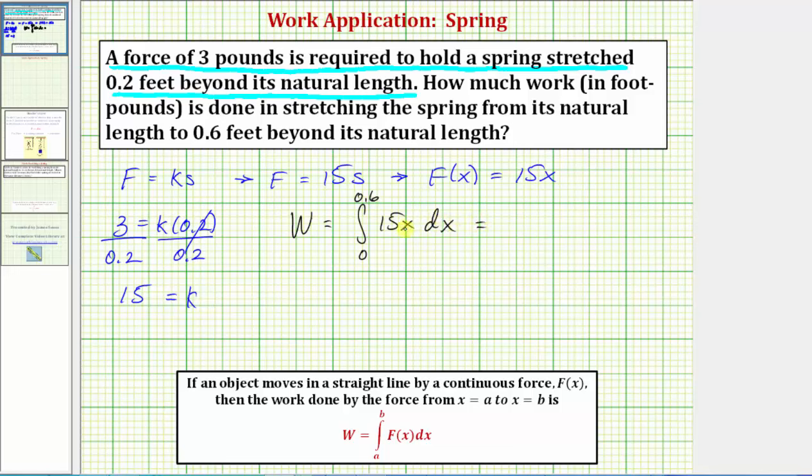So integrating we have 15 times x squared divided by two, or 15 halves x squared. And now F(b) minus F(a) is going to be 15 halves times the quantity 0.6 squared minus 0 squared.